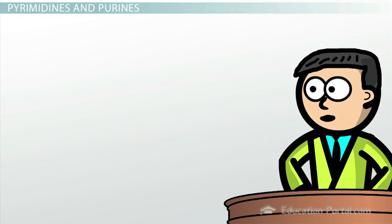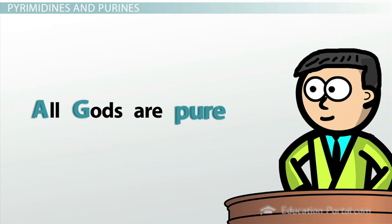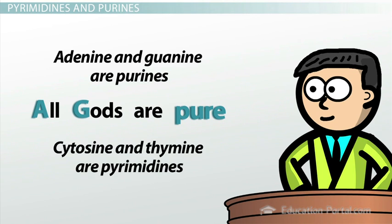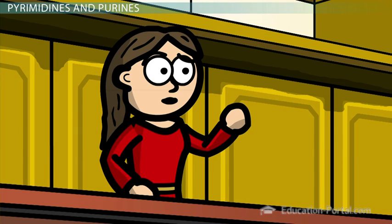I guess you might wonder how I can remember that, but it's really quite simple. All AGs are pure. Adenine and guanine are purines. And by process of elimination, that means cytosine and thymine have to be pyrimidines. Yes, that's a very nice mnemonic aid. Adenine and guanine are purines, but we're getting off track. You were telling us why the chemical structure of nucleotides is important.